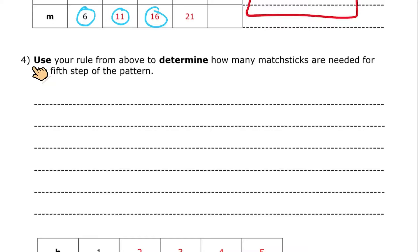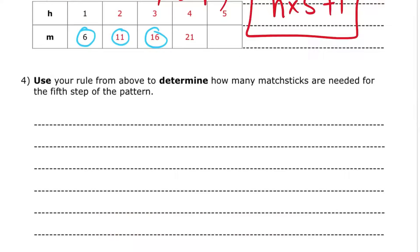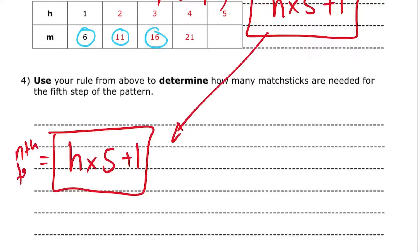So question 4 says, use your rule to determine how many matchsticks are needed for the fifth shape of the pattern. For the fifth step of the pattern, if I use this same formula, the number of houses times 5 plus 1. And remember this is for any stage. So for the nth term. Now I want to find it for the fifth term, for the fifth shape. So I'm going to substitute 5 times 5 plus 1. That gives me 25 plus 1, which gives me 26 matchsticks.